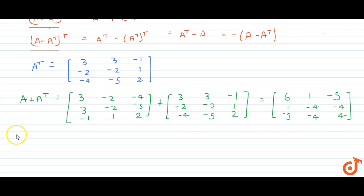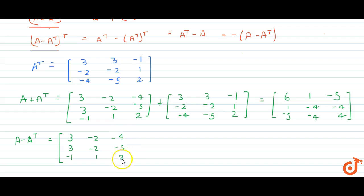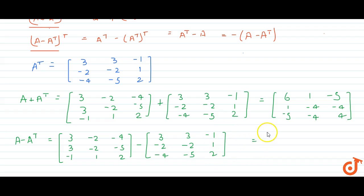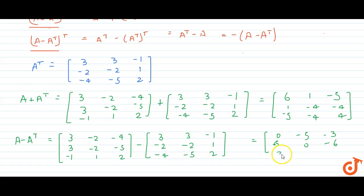Now A minus Aᵀ is given by the matrix [3, 3, -1; -2, -2, 1; -4, -5, 2] minus [3, -2, -4; 3, -2, -5; -1, 1, 2], which equals [0, 5, 3; -5, 0, 6; -3, -6, 0].